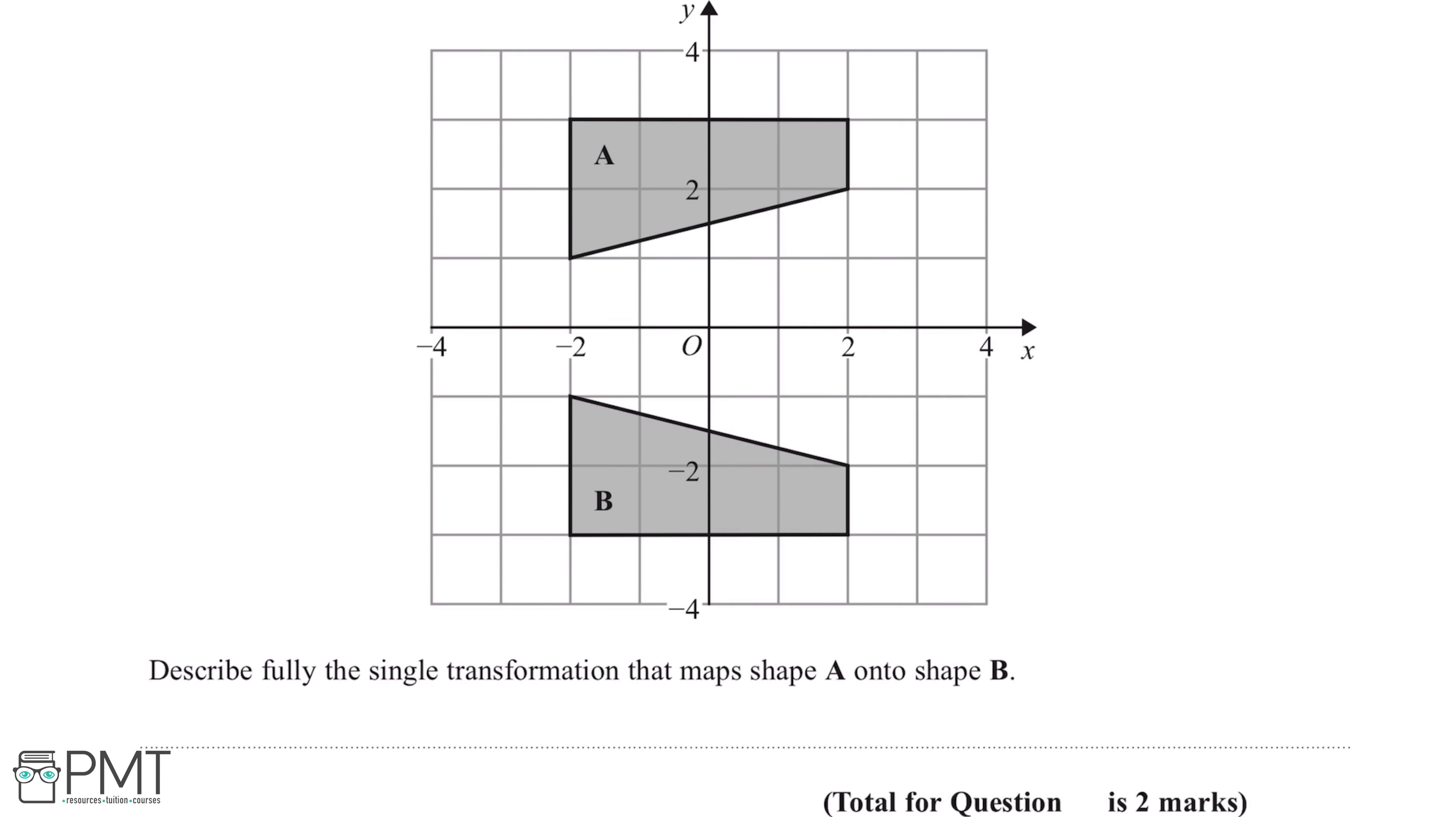which means we need to include two pieces of information in this answer. And that will be the type of transformation that has taken place, and then where it's taken place.